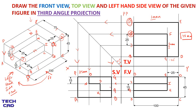This is the completion of the front view, top view, and left hand side view of this 3D figure. There are no hidden lines in these figures when you see from the front view, top view, and left hand side view. If you were making a right hand side view there could be hidden lines, but since we are making only the left hand side view there are no hidden edges. This is the completion of my answer. If you have any queries, you can comment in the comment section. Thank you.